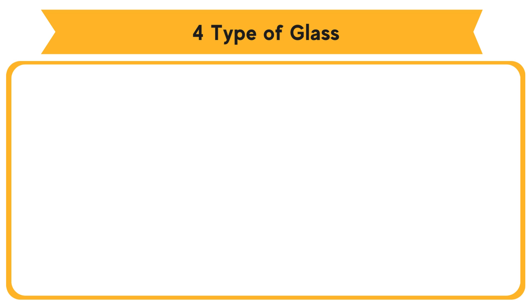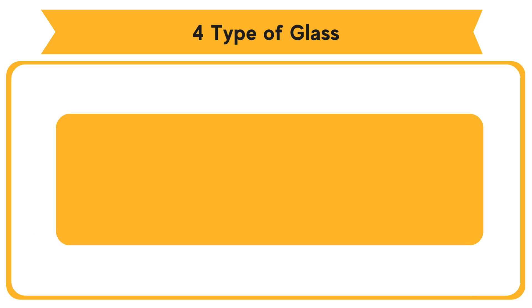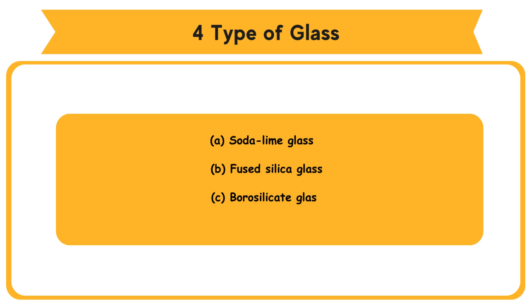Types of Glass: There are four main types of glass, which are A. Soda lime glass, B. Fused silica glass, C. Borosilicate glass, and D. Lead crystal glass.